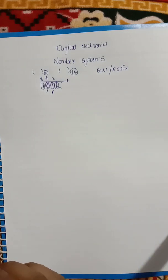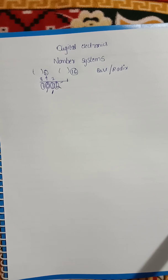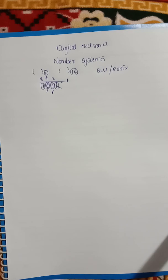If you have a number, each digit has a particular value based on its position. That is the positional and non-positional number system difference.